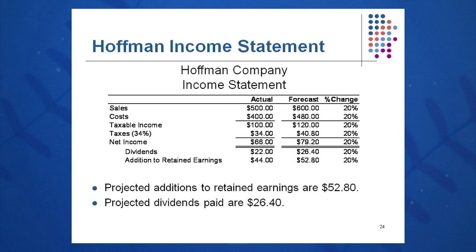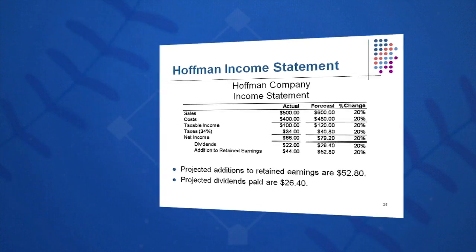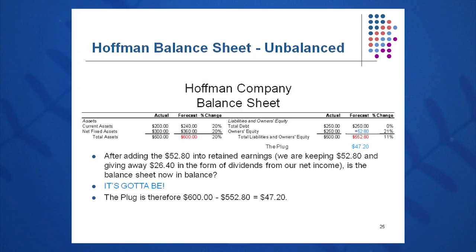Of the $79.20 in net income, we keep $52.80 and give away $26.40 — that's a management decision. If you kept more, you could grow faster organically without going out to get more debt and equity. Management said stockholders are happy, let's give them one-third of net income again next year and keep two-thirds. Now let's move to the Huffman Company balance sheet.